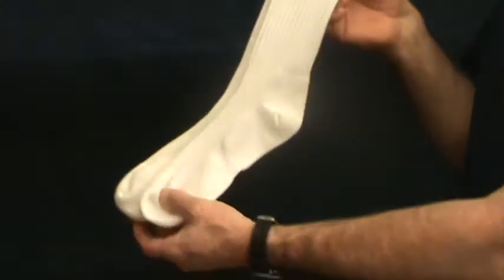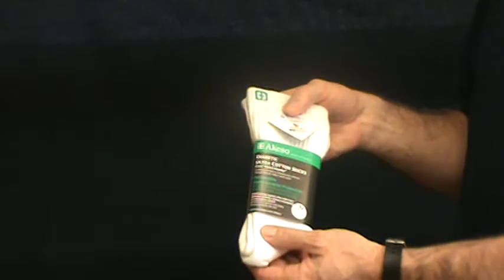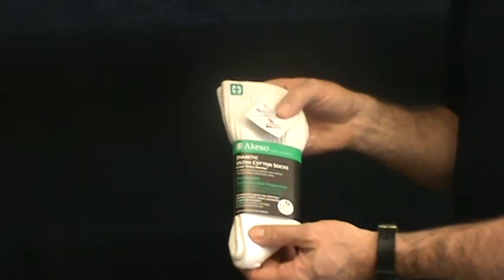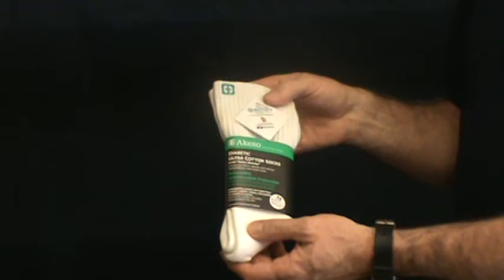The sock is available in a crew length. It's also available in a quarter length, and in a diabetic extra roomy, and this sock is designed for those with a larger calf and ankle area.